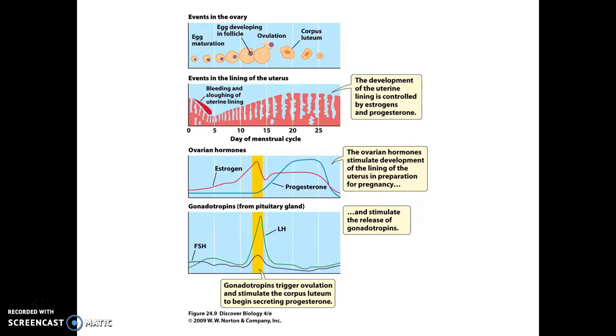After ovulation, the remaining cells of the follicle become a structure known as the corpus luteum. This corpus luteum starts producing a different hormone, progesterone, or the pregnancy hormone. This production of progesterone causes a thickening of the inner lining of the uterus, known as the endometrium.